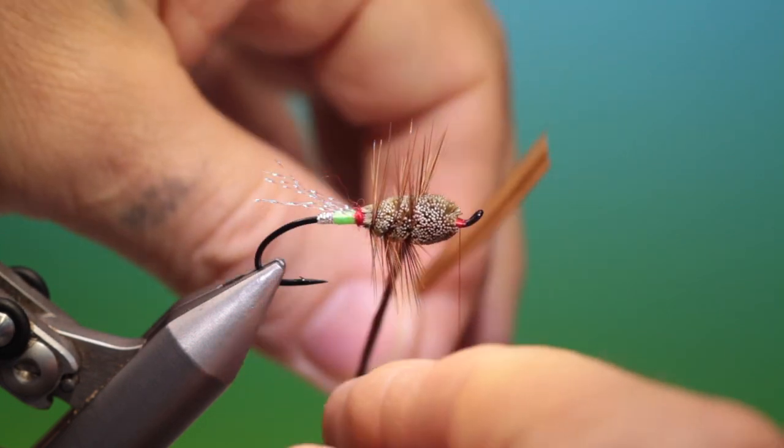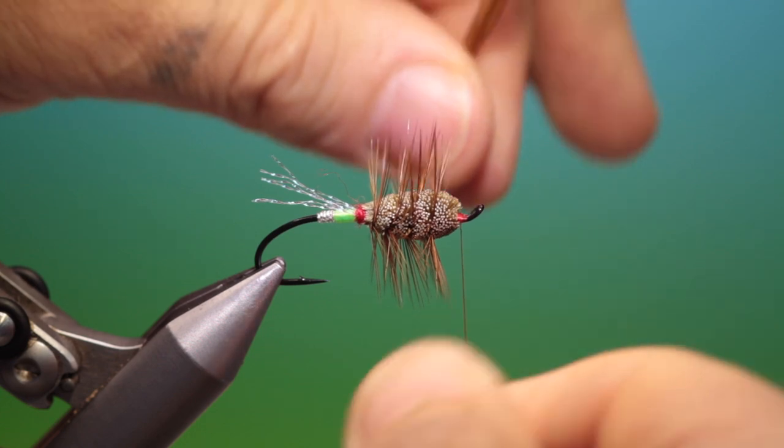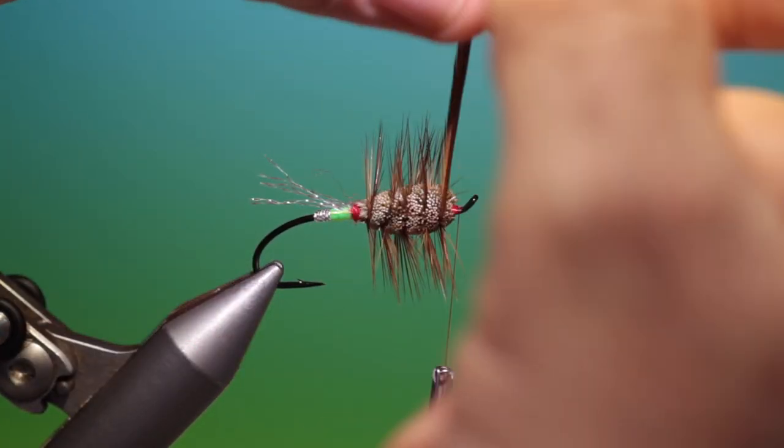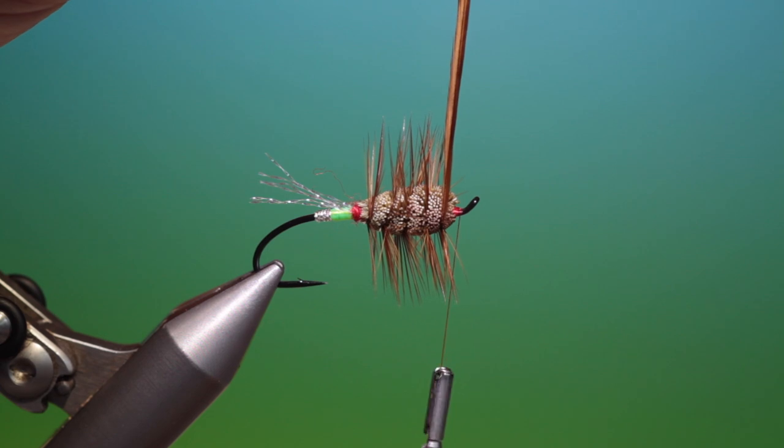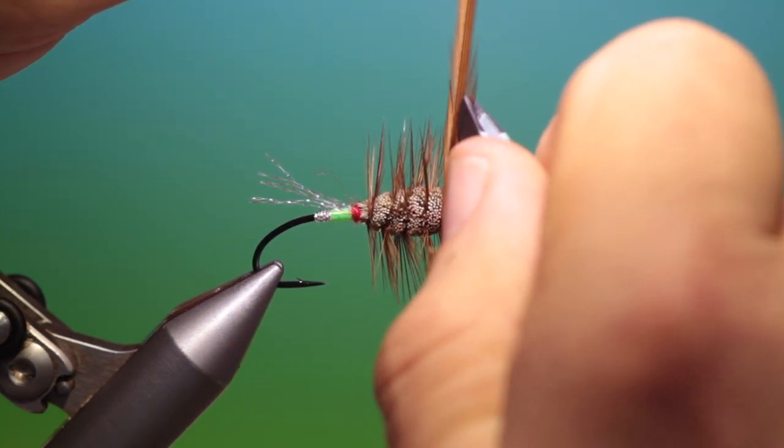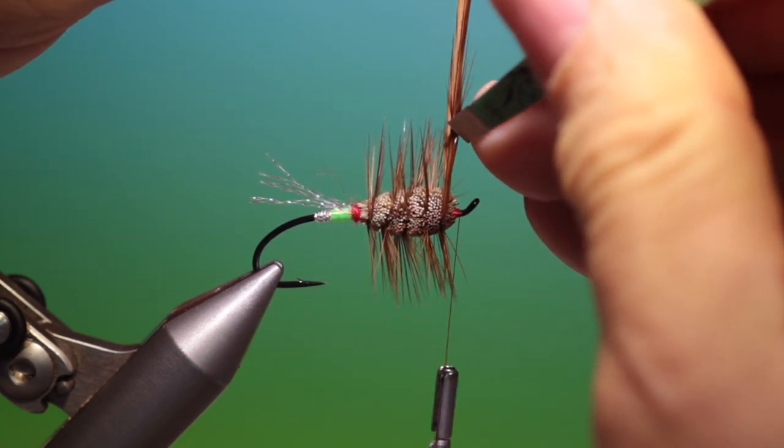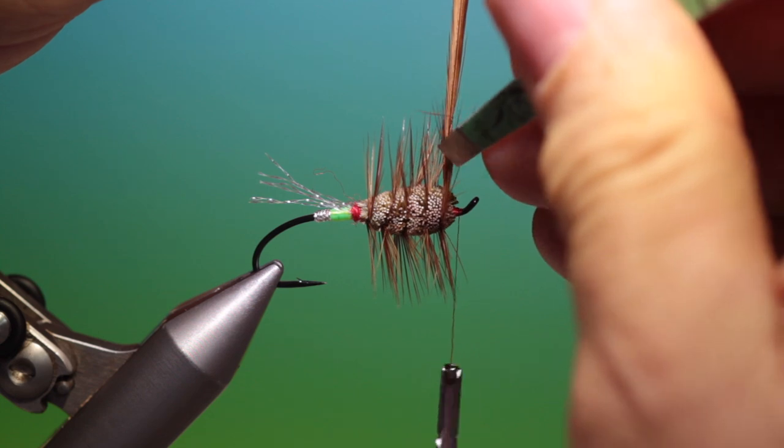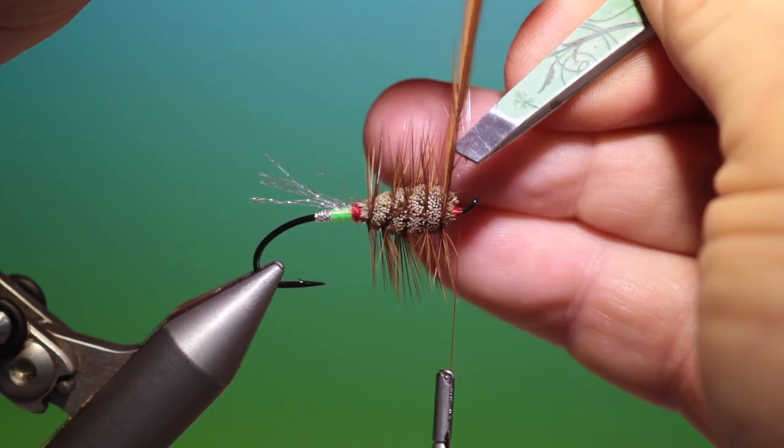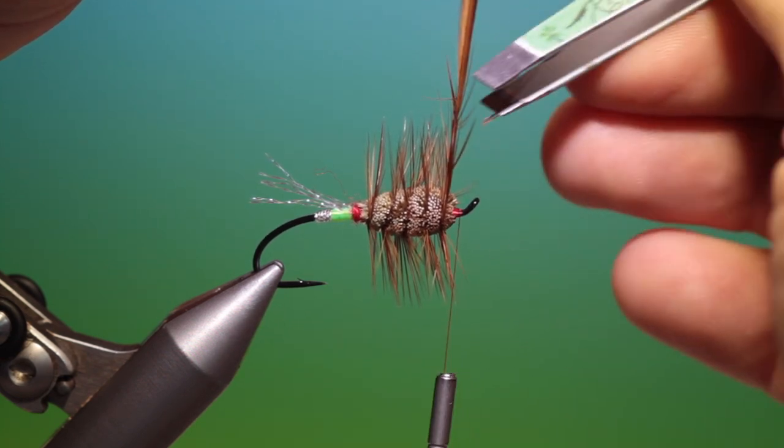This will protect it, keep it in position. Now I can see that I'm coming to an end here so I'll strip off a few of these fibres on each side so I get a nice clean hackle stem to tie off.